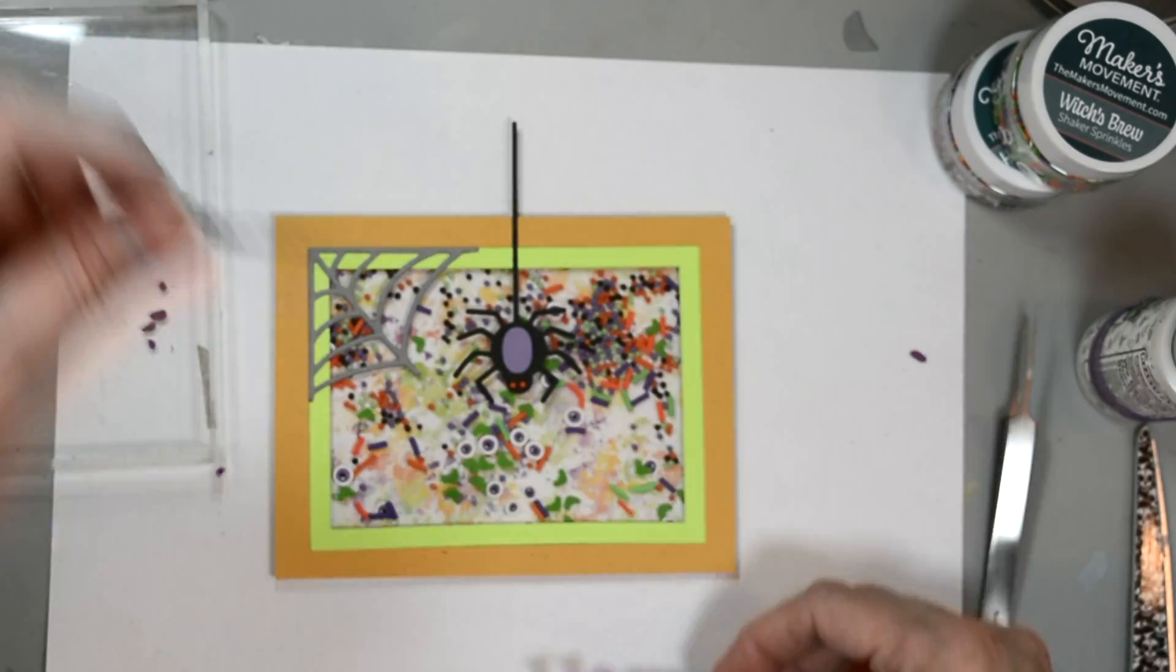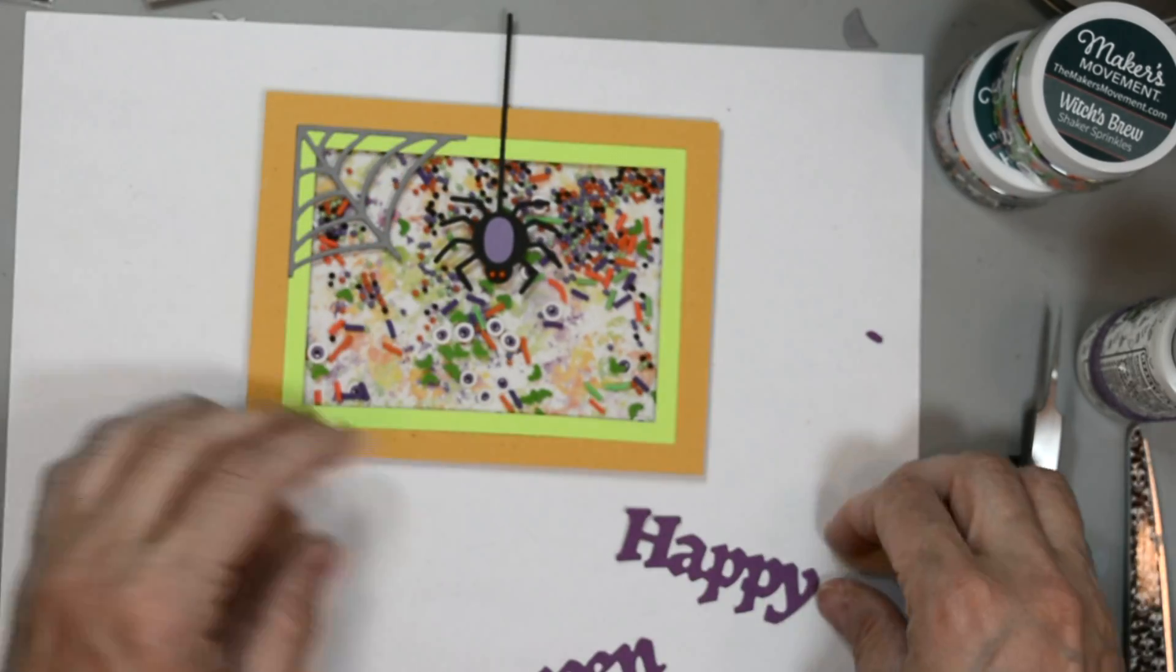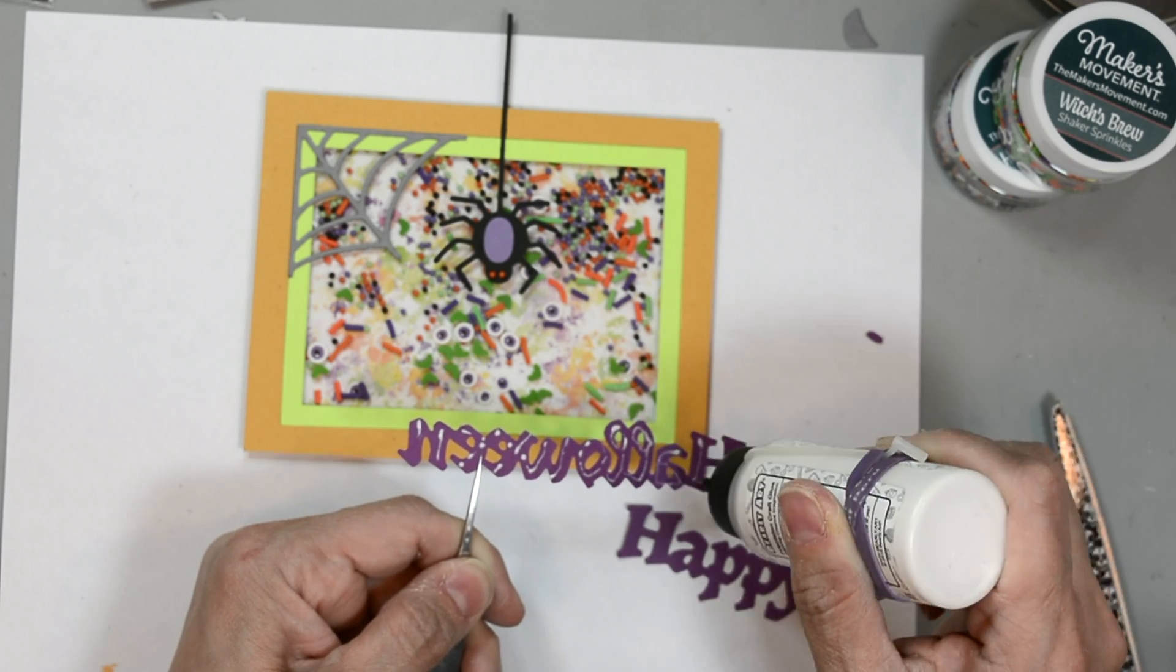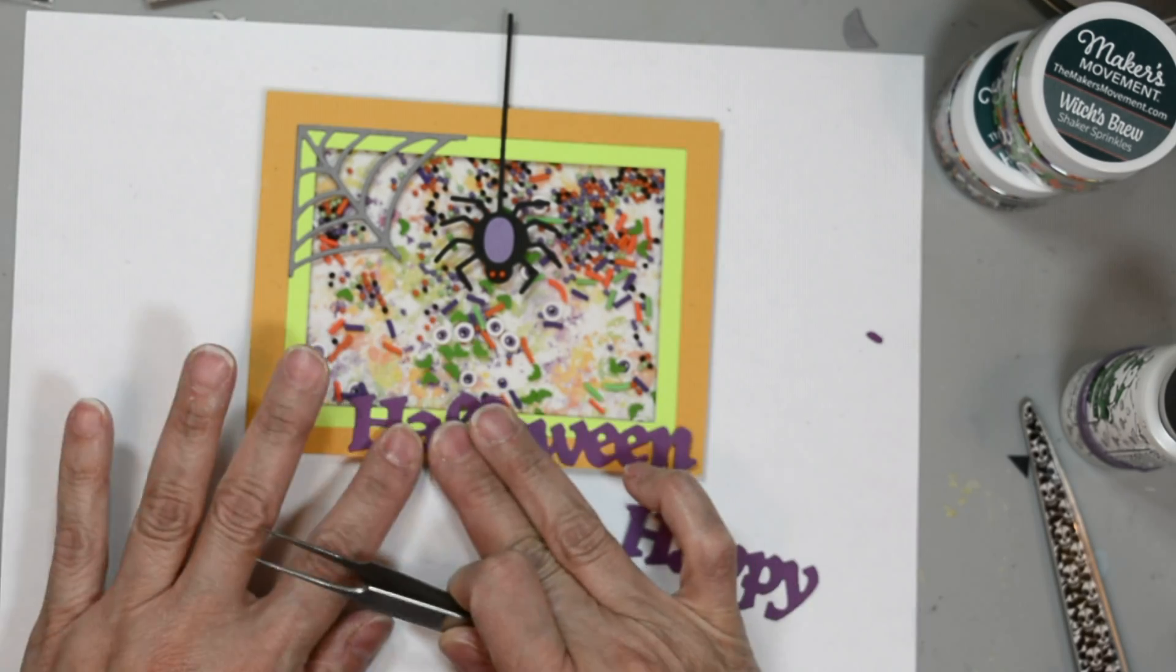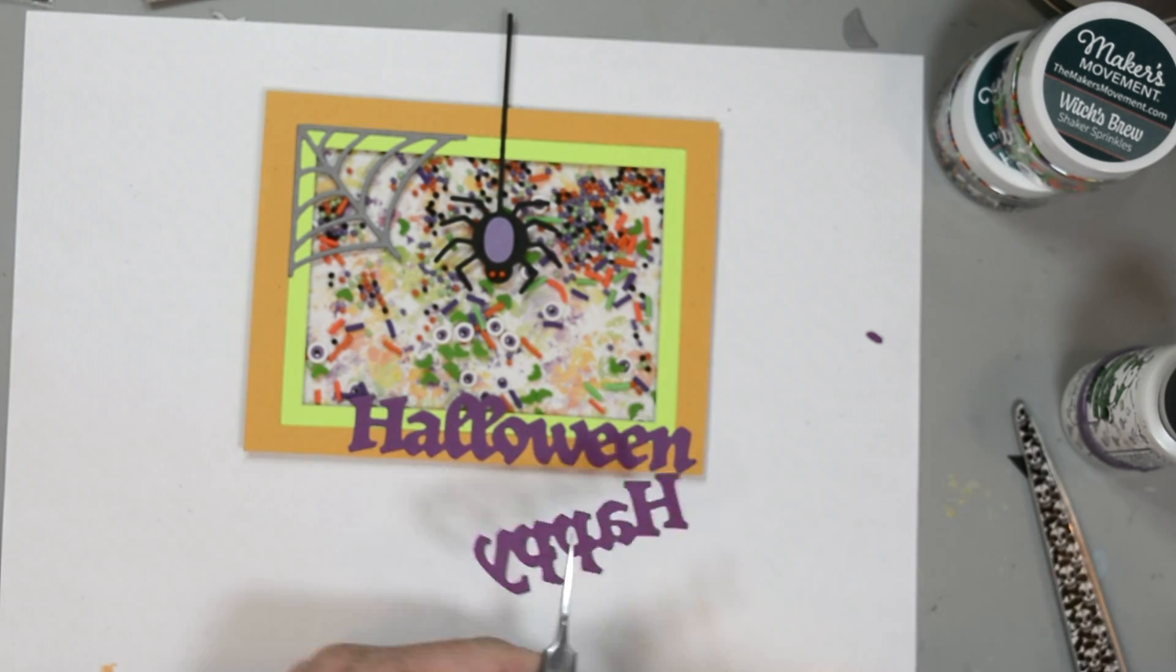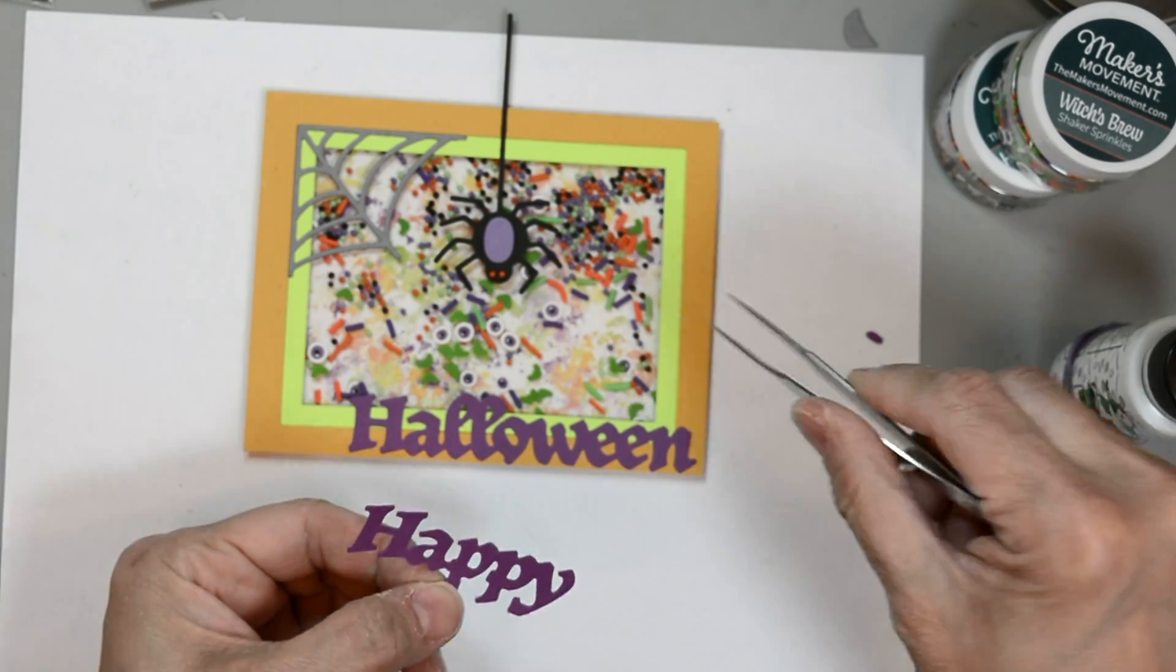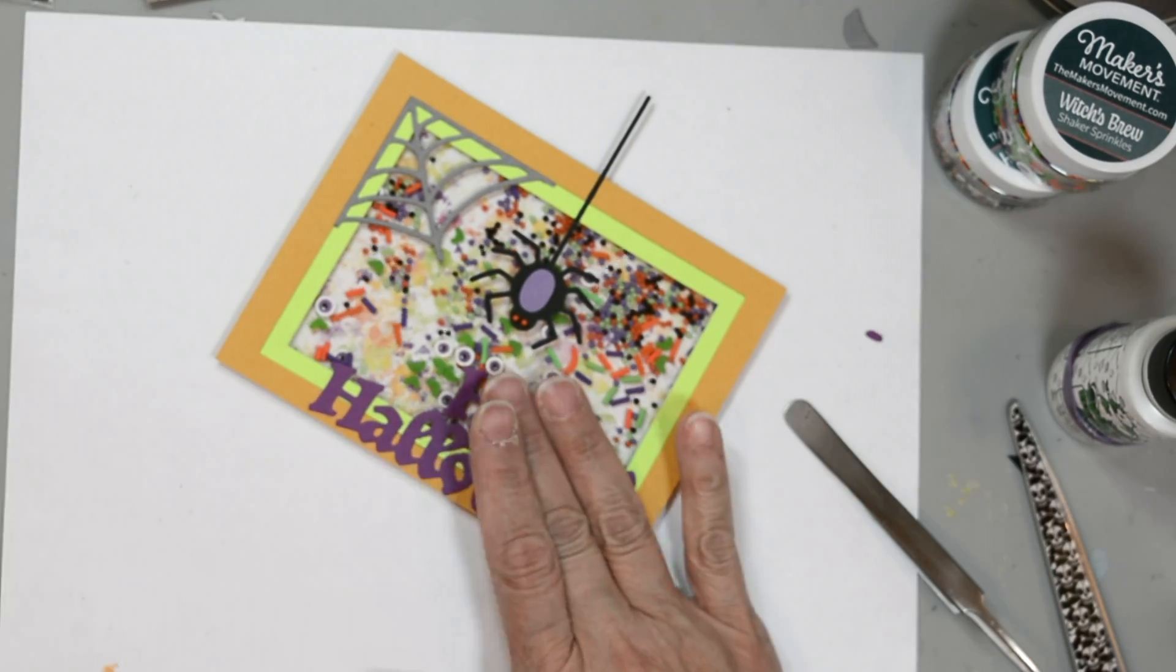Now we're going to go ahead and adhere our sentiment. And I'm going to start with the Halloween first. I grab my precision tweezers here, put little dabs of adhesive on the back, and adhere it to our card. All the way here to the right bottom. Once I have that down, then I can put the happy on there. And I like that you have a little bit of that green and orange popping out through the Halloween sentiment. And then I'm going to place the happy right nestled in here. Press that nice and firm.